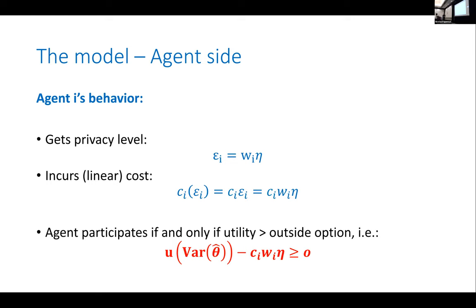An agent will participate in the platform if their utility from joining is higher than some outside option — representing what happens if they don't join. Their utility involves getting a benefit from the computation: theta-hat is the statistic being computed, and its variance measures how accurate the computation is. The more accurate the computation, the more benefit they get. But they also care about their privacy cost, trading off the benefit from the platform against the privacy cost of giving their data away.